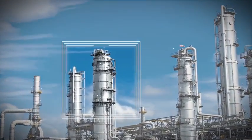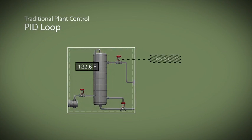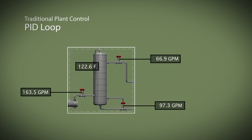In a traditional plant control scenario, a PID loop only monitors a small set of variables. When lab samples or measurements indicate a process change, operators make adjustments to maximize the product stream.